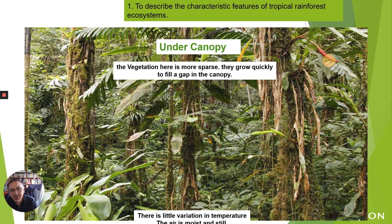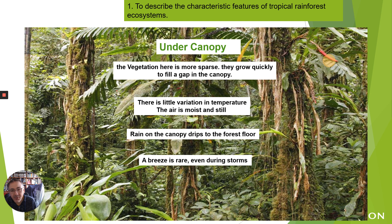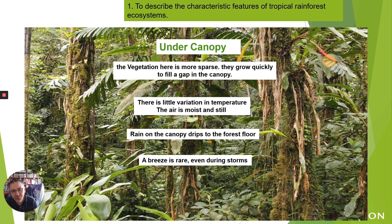Coming down to the under-canopy, vegetation is much more sparse because solar energy is trapped and covered by the canopy above. It's very warm and moist, with rainfall dripping down off those leaves and drip tips. There's very little wind as it's all blocked by the leaves and trees above. As soon as a tree falls, plants in this layer will try to fill that gap because so little sunlight makes it here.